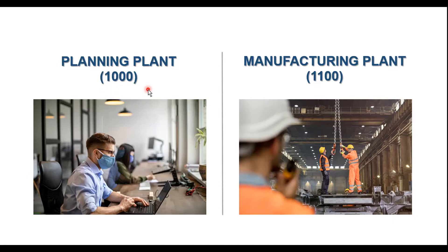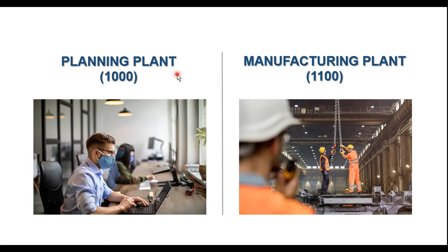Once the production orders or process orders have been created, they will be sent to the manufacturing plant 1100, where there are no planning activities. They just follow the instructions provided in the process or production orders. The complete planning of the finished product is done in plant 1000, while the actual production happens in plant 1100. Once the finished goods are manufactured, they will be shipped back to the planning plant 1000. Let's see in SAP what the prerequisites are and how this process works.